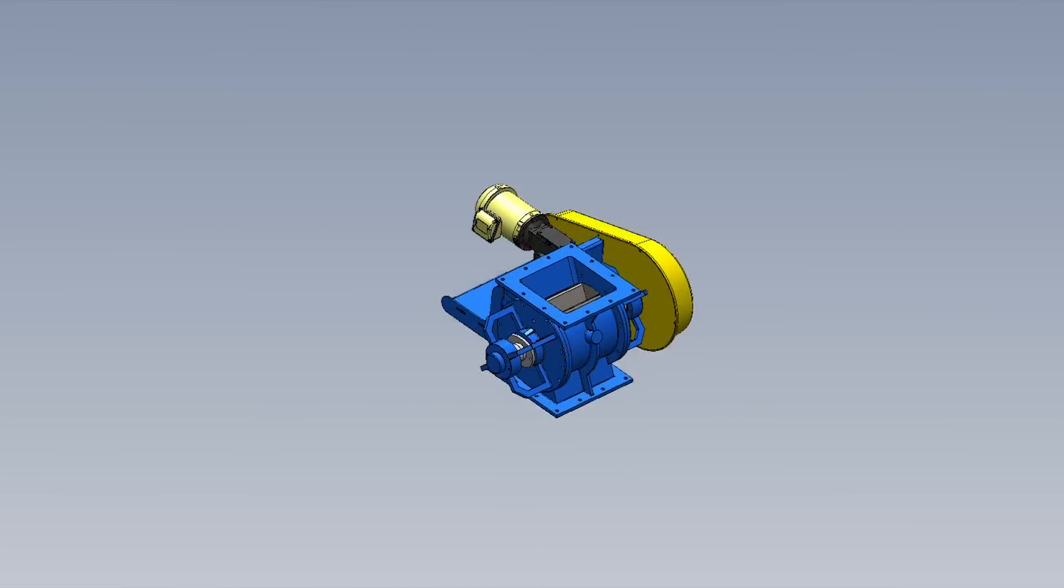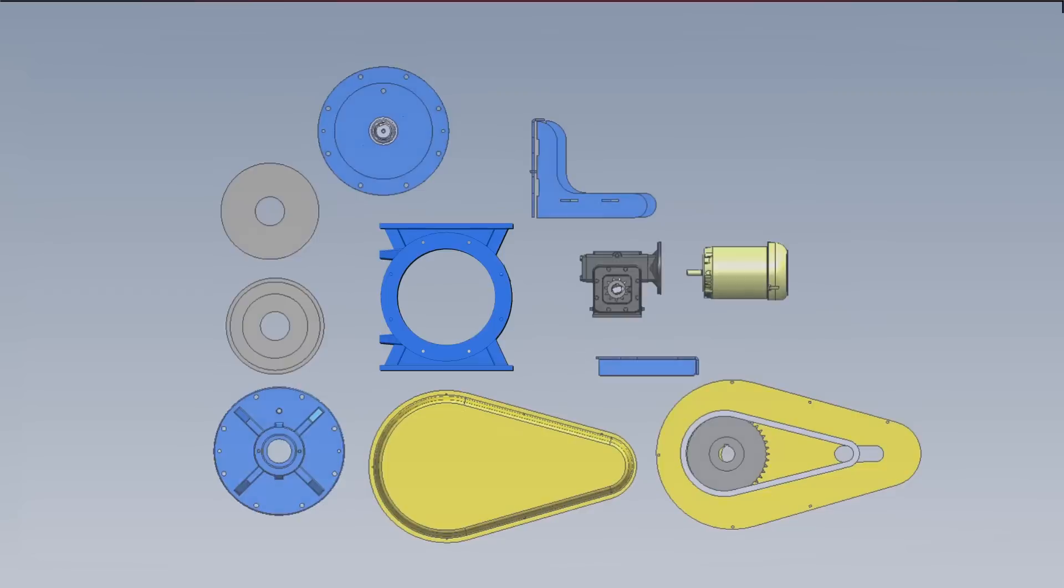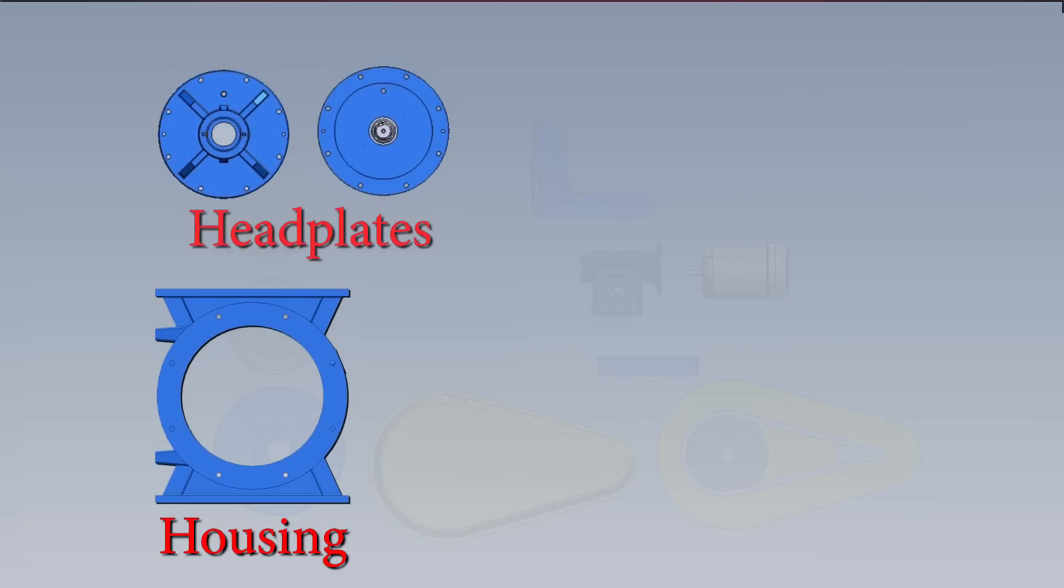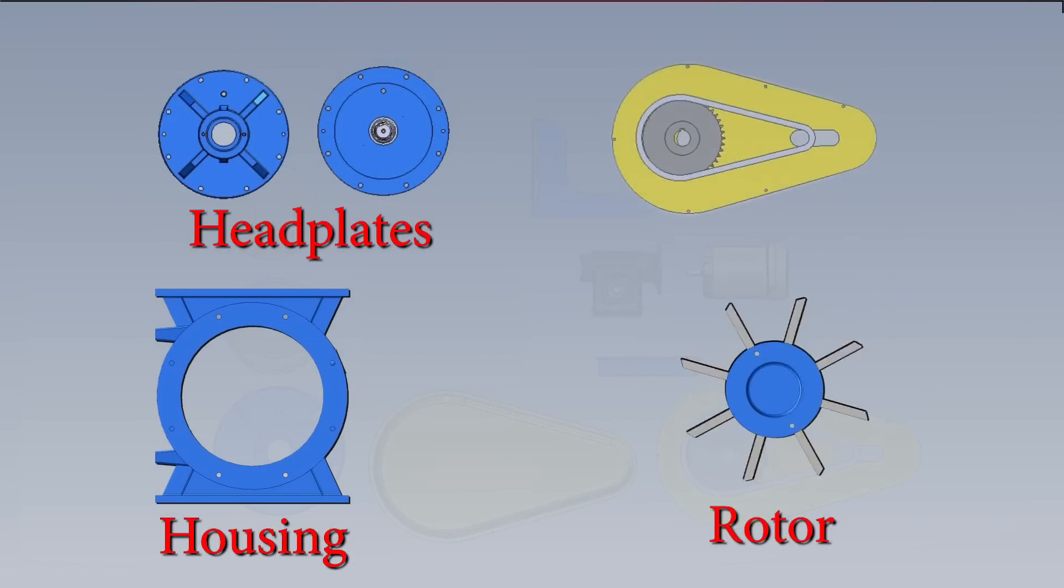The rotary valve has four main components: the housing, the head plates, the rotor, and the drive arrangement.